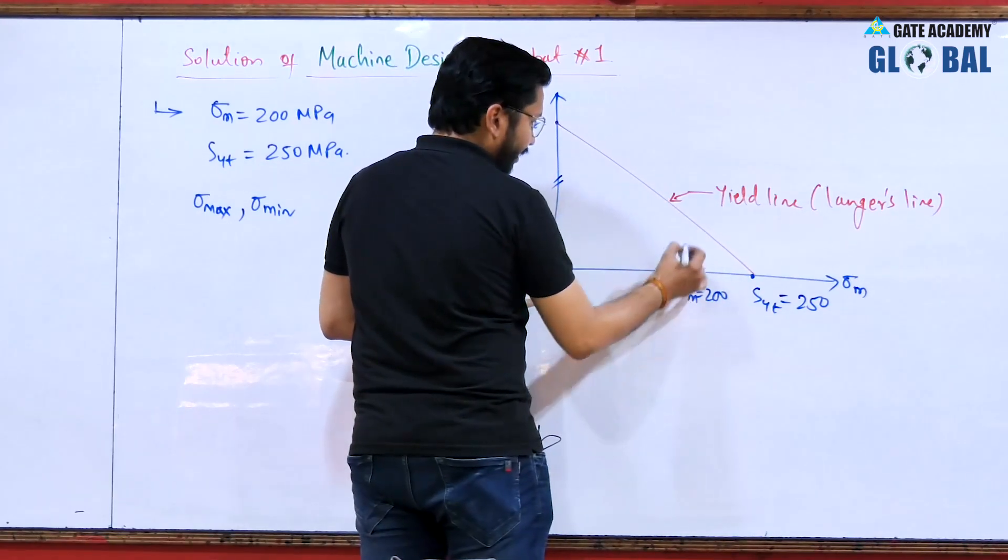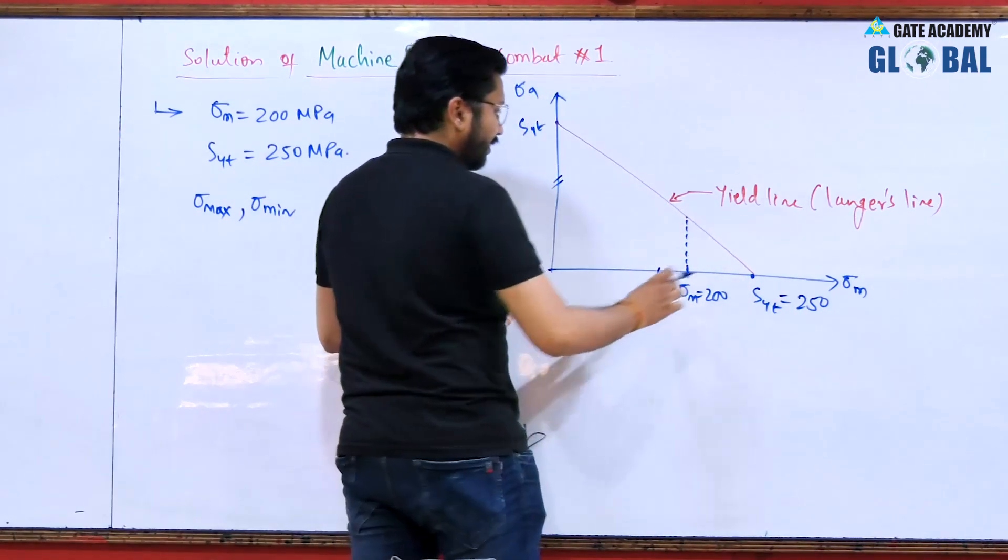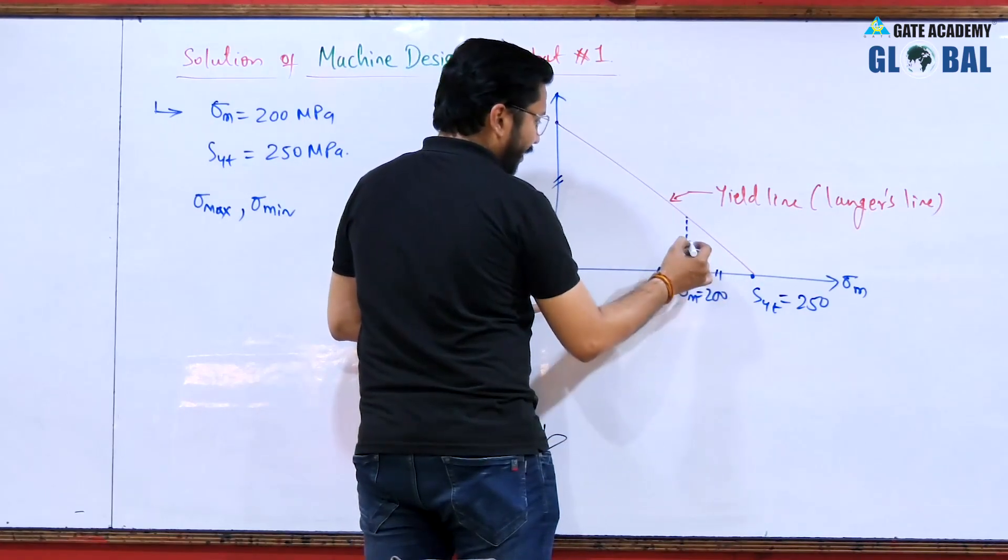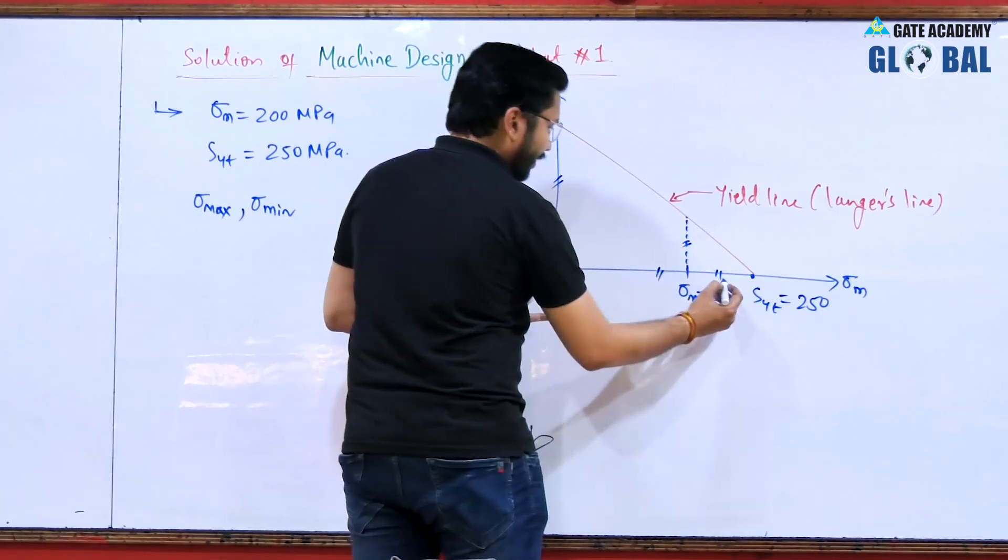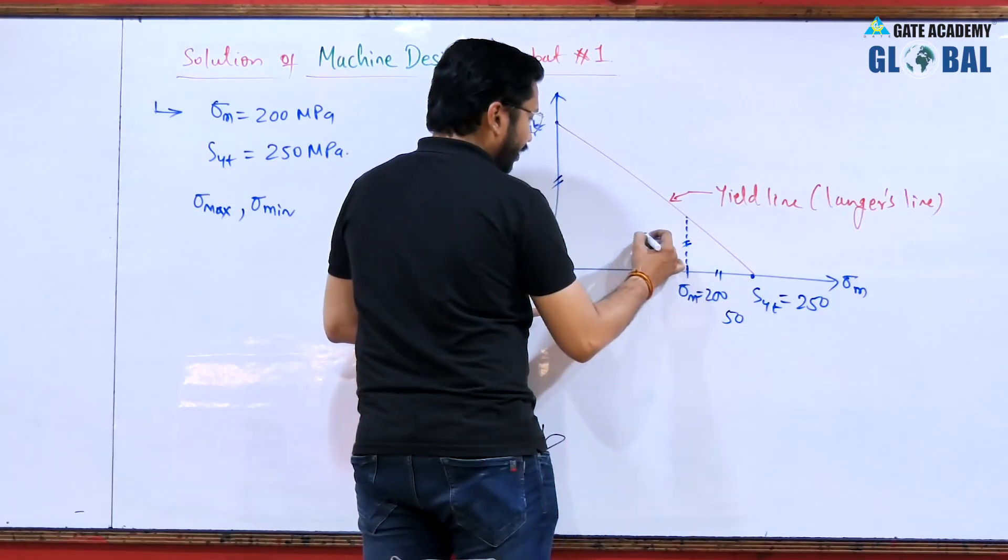From this particular point if I draw a perpendicular line like this, from similarity of triangles you can see that this triangle will also have the same base and perpendicular. Here the base will be 250 minus 200, that is 50, so the perpendicular will also be 50.